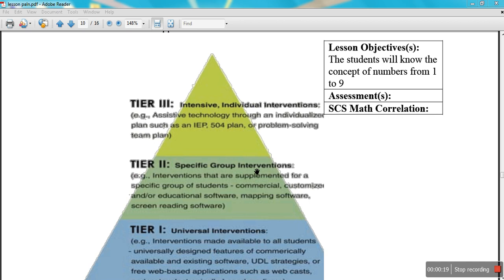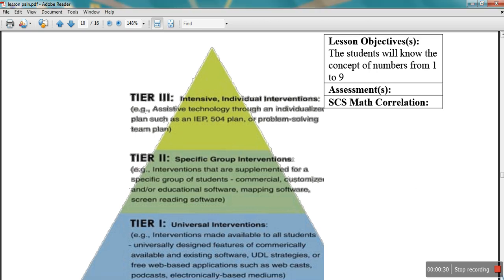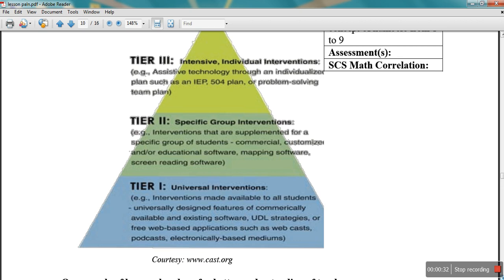Tier 2 will be specific group intervention, which is for similar kind of students specifically designed. And third tier is intensive individual intervention, which is specific IEP for individuals. So you can design your lesson plan in three tiers.